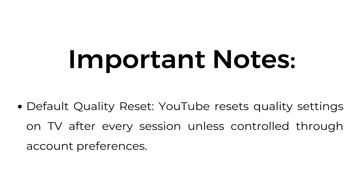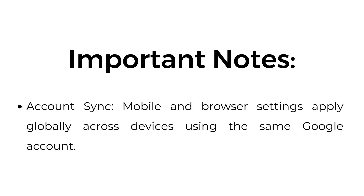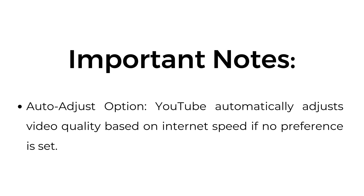Important notes. Default quality reset: YouTube resets quality settings on TV after every session unless controlled through account preferences. Account sync: mobile and browser settings apply globally across devices using the same Google account. Auto adjust option: YouTube automatically adjusts video quality based on internet speed if no preference is set.